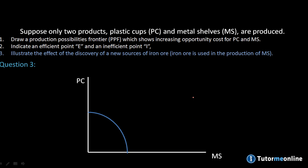The third question is to illustrate the effect of a discovery of a new source of iron ore. Iron ore is used in the production of metal shelves only. Before the discovery, let's say we can make 15 metal shelves and 20 plastic cups. If we use all resources just for metal shelves, we get 50 metal shelves and zero plastic cups. Since iron ore is only used in metal shelf production, nothing changes for plastic cups — we cannot produce more plastic cups with iron ore. So our PPF is going to swivel out to the right, starting from the same point on the plastic cups axis.